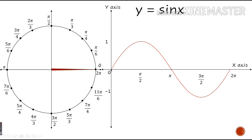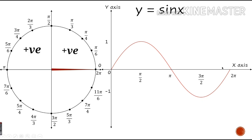In the second quadrant, pi by 2 to pi, the y value decreases from 1 to 0. In the third quadrant, pi to 3 pi by 2, it decreases further — sin of 3 pi by 2 is minus 1, so all values are negative from 0 to minus 1. In the fourth quadrant, 3 pi by 2 to 2 pi, values increase but are still on the negative side. So the sine function is positive in the first and second quadrants. The maximum value of sine is plus 1 and the minimum value is minus 1.